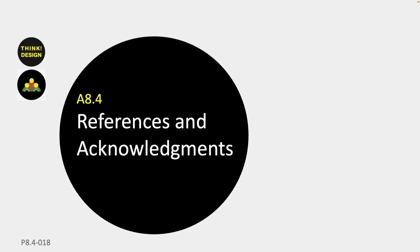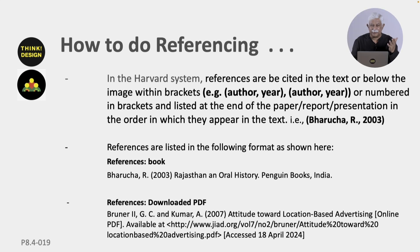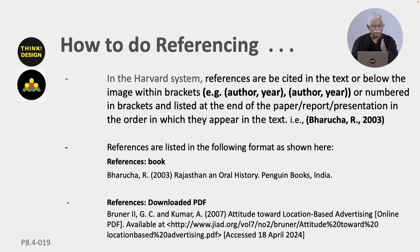Let us have a look at references and acknowledgments — this is repeated from section A3. It is recommended to follow one system. Here is an example of following the Harvard system, where along with the text you put the author and the year, and then in the references at the end of the report or presentation you mention the author, the year, the title of the book or article, the publisher and the place. If it is something downloaded from the internet, you mention the author, the year, the title of the article or page, the URL, and when you accessed it.